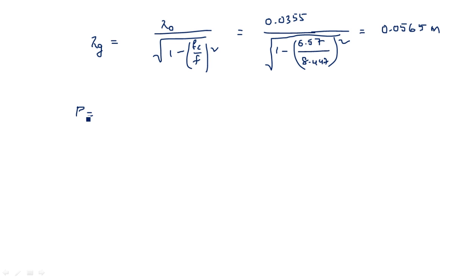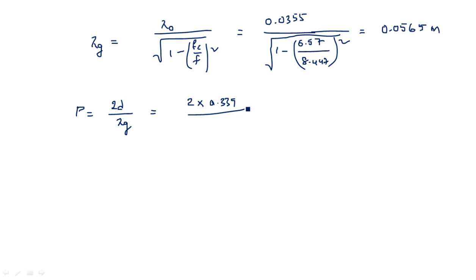The value of p is calculated as p = 2d / λ_g. With d = 33.9 cm = 0.339 m and λ_g = 0.0565 m, we get p = (2 × 0.339) / 0.0565 = 12.